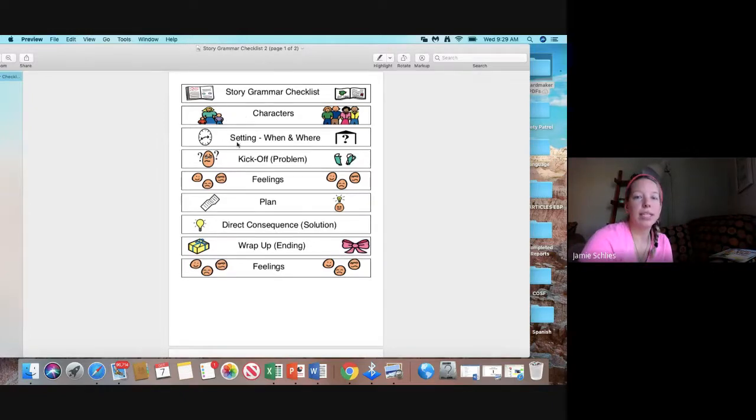The second is the setting. We need to figure out where this is taking place. Is it at school? Is it at home? Is it at the park? And when? Is it during the day? Is it at night? Is it in the winter? Is it during fall? When is it? And then every story has a problem. So we have to figure out what is their problem? And then how do the characters feel about that problem?